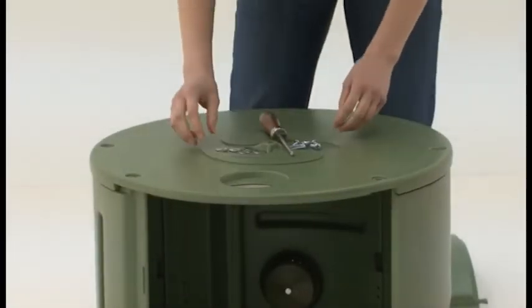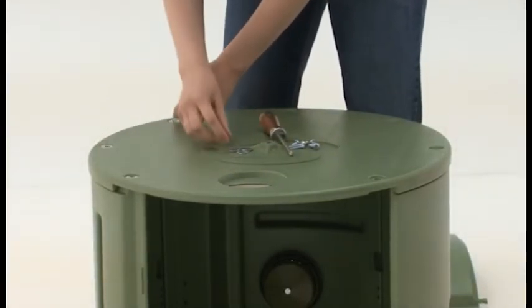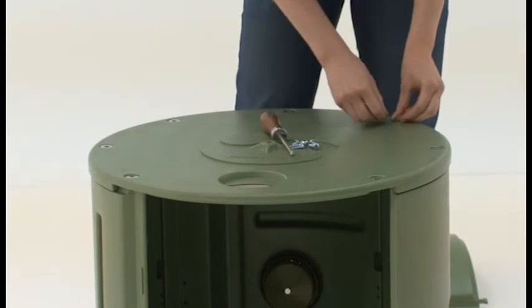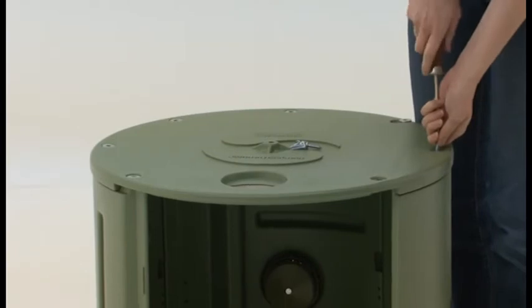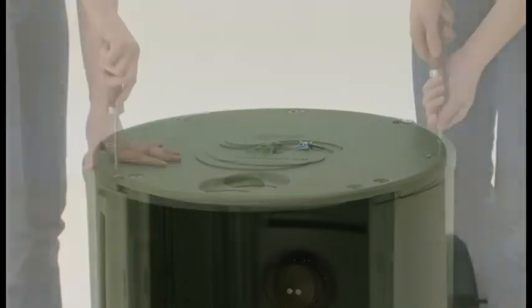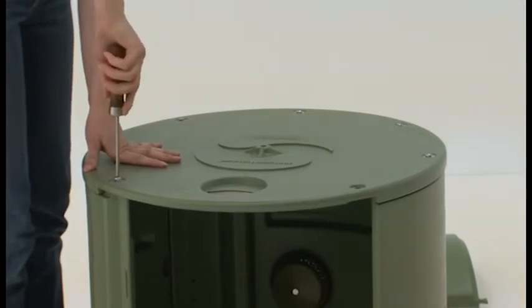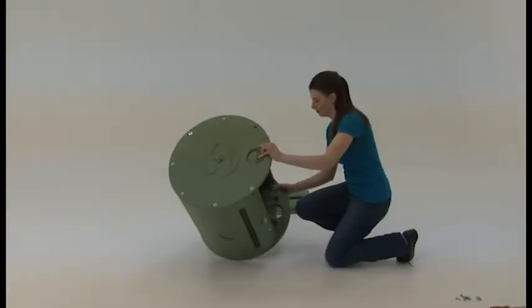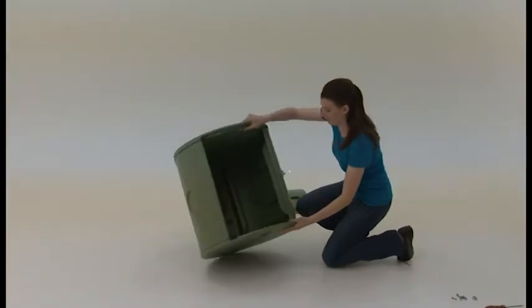Secure the top end cap to the panels through their posts with the 5-16 inch flat washers and number 14 by 1 inch screws. Tighten the screws until they are just snug. Carefully turn over the partially completed drum assembly and secure the second end cap in the same manner.